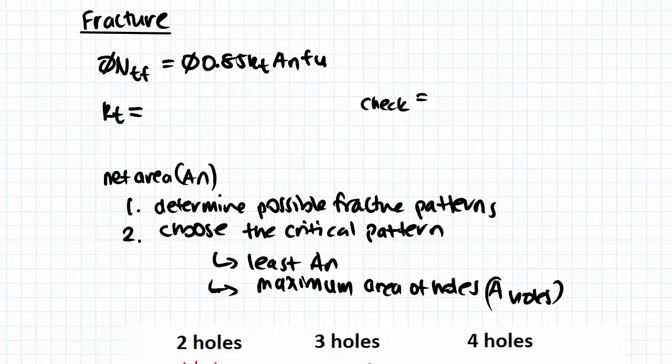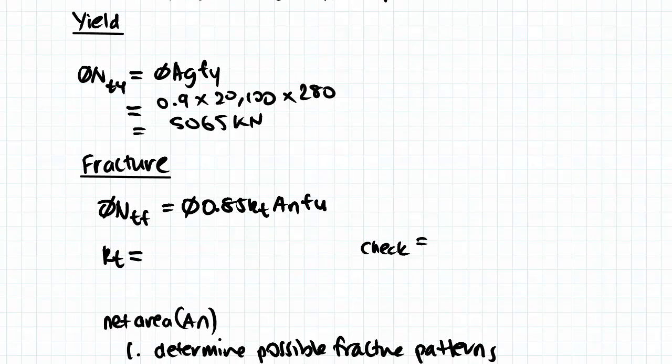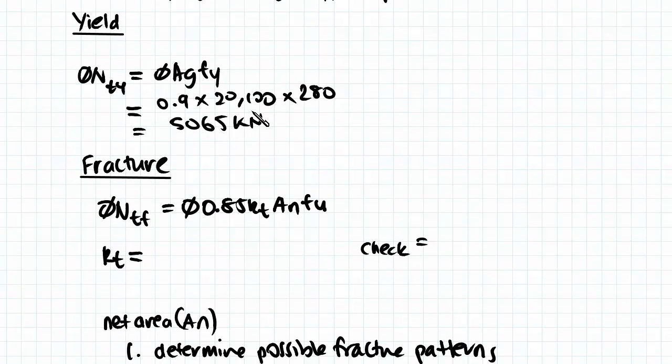Hey everyone, so in this video we're going to be continuing on from what we did in the last video. What we did in the last video was find the yield section capacity, which was found out to be 5065 kilonewtons.